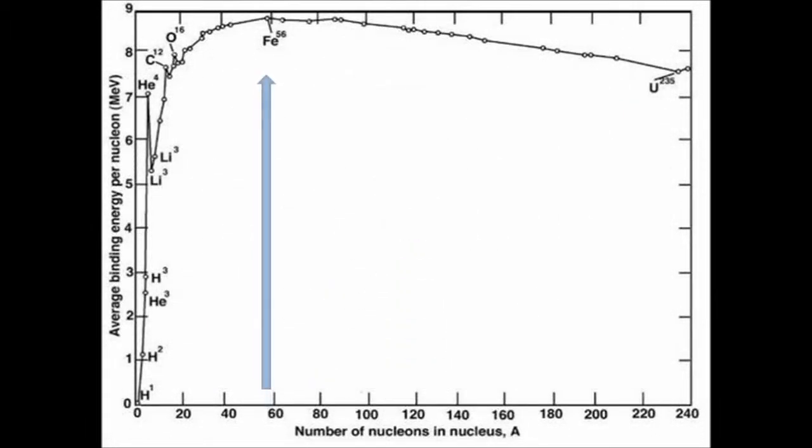Iron's 26 protons and 30 neutrons are bound together more strongly than the particles in any other nucleus. Iron is said to have the greatest nuclear binding energy of any element. More energy per particle is required to break up an iron 56 nucleus than the nucleus of any other element.